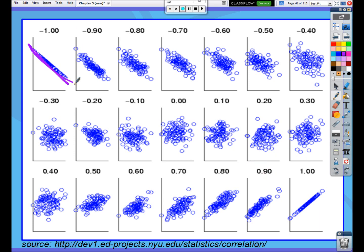But notice negative 1, perfectly linear. And it's making a straight line in a negative direction. Positive 1, perfect straight line, but with positive slope.